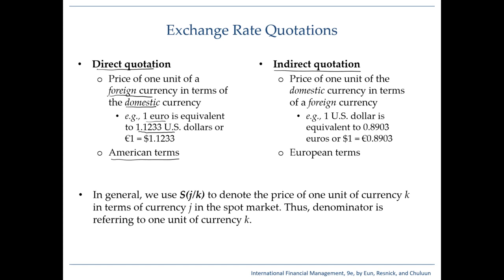On the flip side, you could also express how much one unit of your domestic currency is worth or equivalent to in terms of a foreign currency. So you could talk about one US dollar being equivalent to 0.8903 euros. This is called the indirect quote, or in European terms. Naturally, these two are simply reciprocals of each other. So if you know the direct quote, you can always find the indirect quote and vice versa.